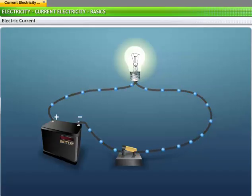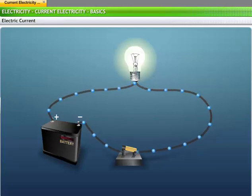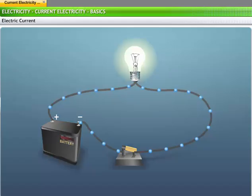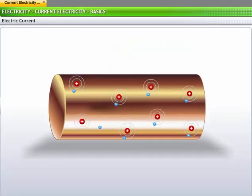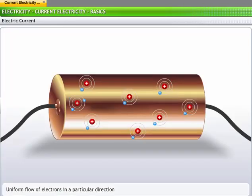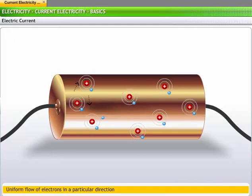Before learning about the cause and applications of electric current, let us examine the features of electric current. Typically, in a conductor, free electrons move randomly. When these electrons are influenced to move uniformly in a specific direction, we get electricity, or electric current.